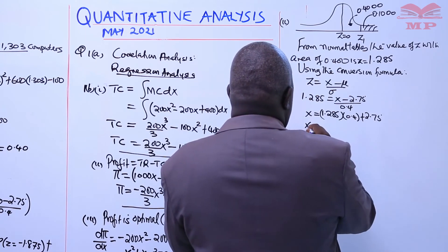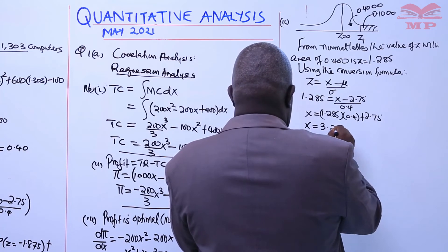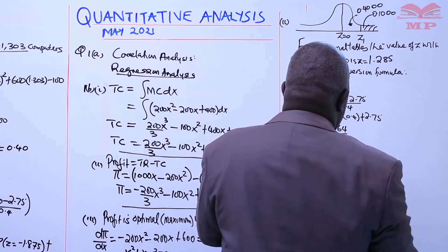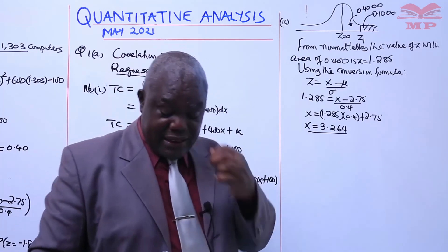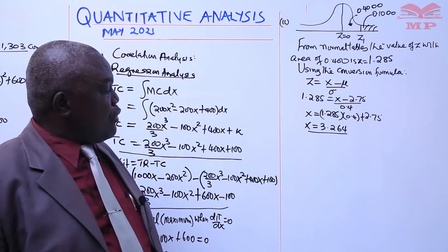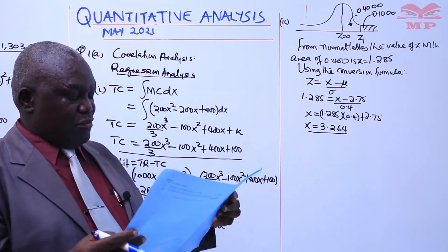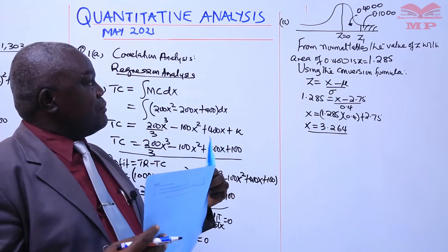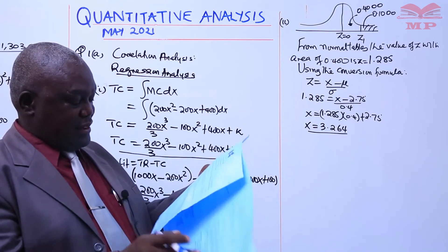That gives X equals 3.264. Therefore the minimum grade point aggregate required for a student to be among the top 10 percent is a score of 3.264.